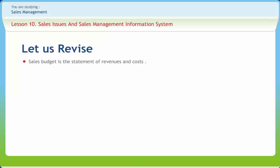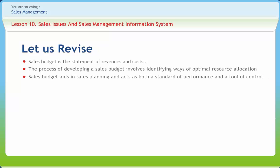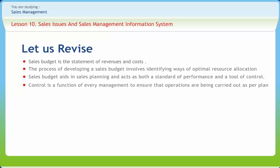In summary: the sales budget is a statement of revenues and costs expected for a given time period and is among the most important control devices available to sales managers. Developing a sales budget involves identifying optimal resource allocation to various selling activities. A sales budget aids in sales planning and acts as both a standard of performance and a tool of control. Sales control ensures the achievement of personal selling objectives.